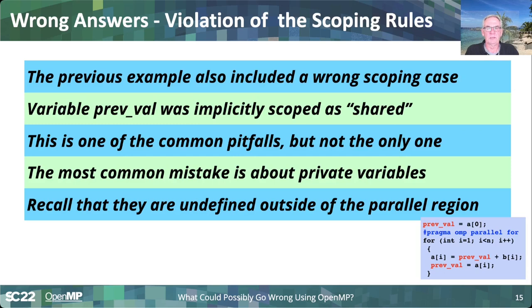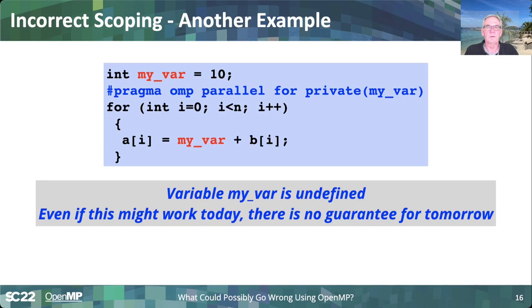Another common mistake is about private variables. Private variables are undefined outside of the parallel region. So if I assign a value to a private variable outside of the parallel region, it doesn't help — the value outside doesn't matter. Here in the loop I have a variable called MYVAR, used inside the parallel for. I nicely initialize it to 10 outside, but it's not defined inside the parallel region — it's like a different variable. This is illegal OpenMP: MYVAR is not 10 inside the region. Maybe today the compiler does that for you, but you cannot assume it.